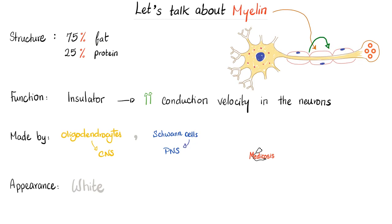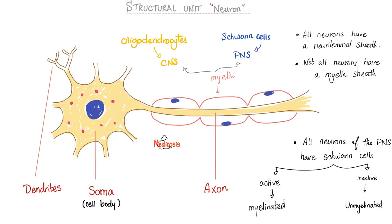Who makes myelin? In the central nervous system, oligodendrocytes; in the peripheral nervous system, Schwann cells. Not all nerves have myelin — some are myelinated, some unmyelinated. All peripheral nerves have Schwann cells, but in some cases the Schwann cells are active and produce myelin, while in others they are inactive and the nerve remains unmyelinated.